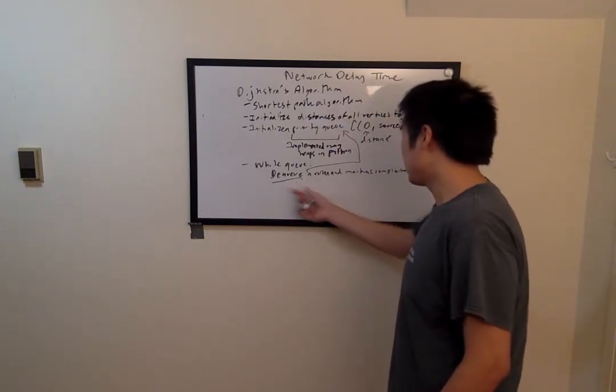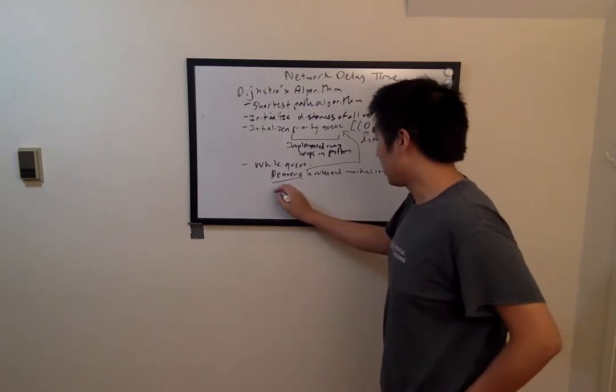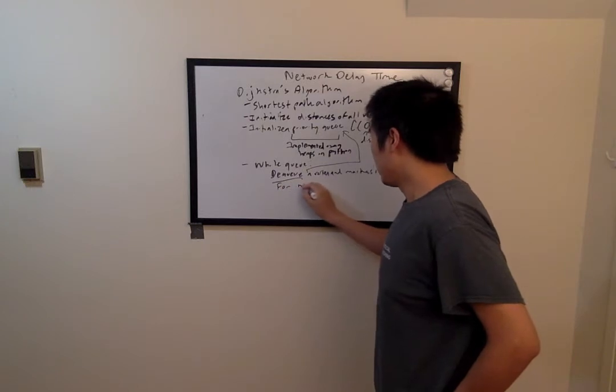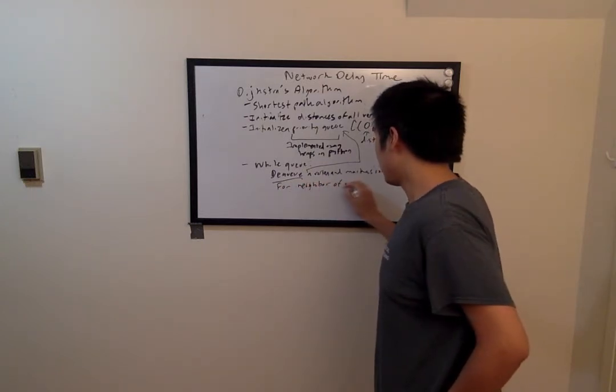The next step after dequeuing this vertex, we will look at all neighbors of the vertex. For neighbor of vertex,